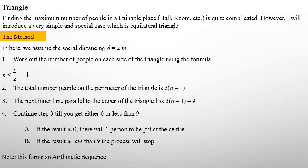The next interesting shape is a triangle. A general triangle is highly complicated, so I assumed the triangle is equilateral, which is much easier to deal with. For simplicity, let us assume the social distancing value is 2 meters. Analyzing along any side, I get N as the maximum number per side. The maximum number around the perimeter will be equal to 3 times N minus 1. The next inner layer will be that value take away 9, and I will show you why later on.